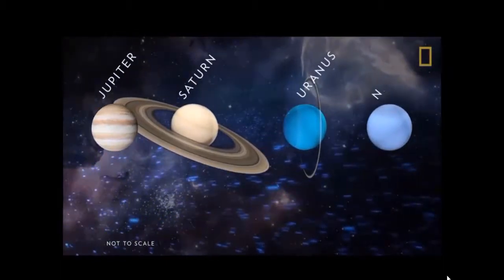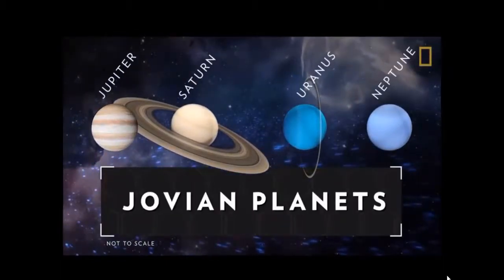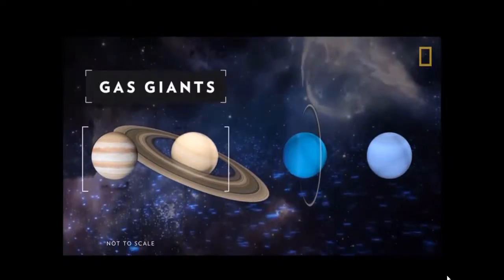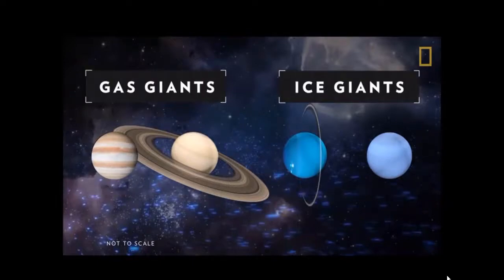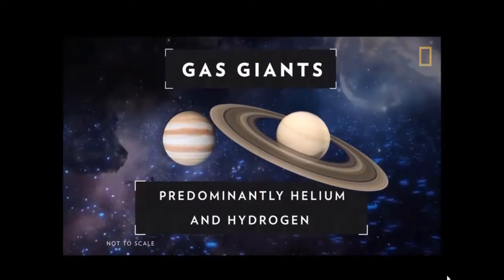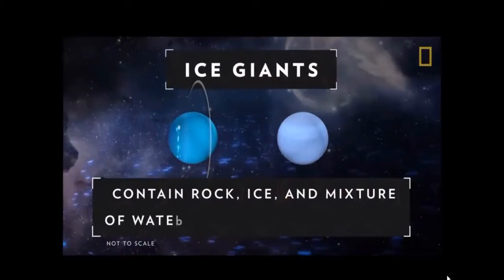Now we will see the jovian planets of the outer solar system. It includes the gas giants Jupiter and Saturn, and the ice giants Uranus and Neptune. The gas giants are mainly made up of helium and hydrogen, and the ice giants contain icy rocks, methane, and ammonia.